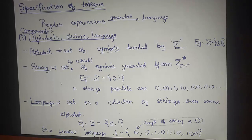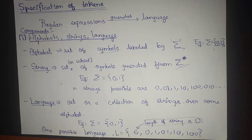We know that a lexical analyzer reads a source program character by character and produces a stream of tokens. The token may be an identifier, a variable, a constant, an operator, or a keyword. Regular expressions are used in order to specify these tokens.